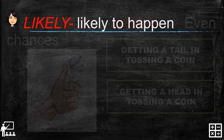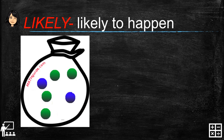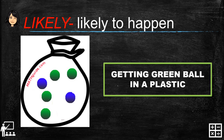Next is likely to happen. In this experiment I have balls in a plastic container. Getting a green ball is likely to happen — likely to happen is just seventy-five percent chances that we may pick a green ball. As you can see, there are four green balls compared to two blue balls, so it is most likely to happen because there are more green balls than blue balls.